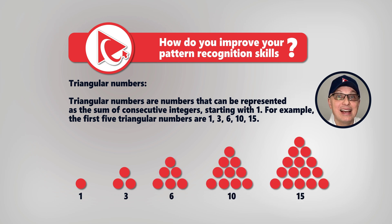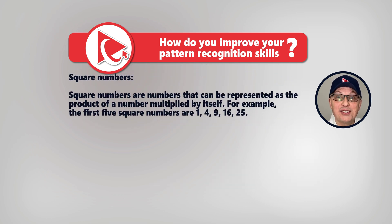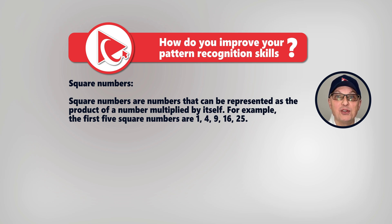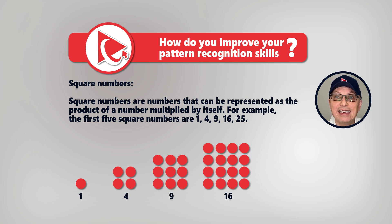Next on my list are square numbers. Square numbers are the numbers that can be represented by a product of a number multiplied by itself. For example, the first five square numbers are 1, 4, 9, 16, and 25.